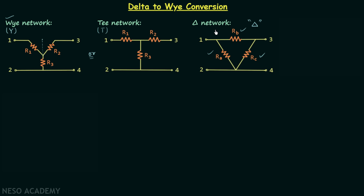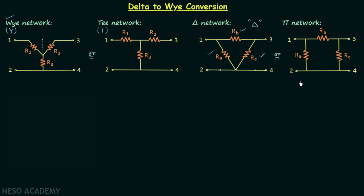We can have the same network by lifting a terminal of one branch and placing it elsewhere, and doing the same for another branch. All parameters remain the same, but here the three resistors form a pi shape — that's why we call it a pi network.